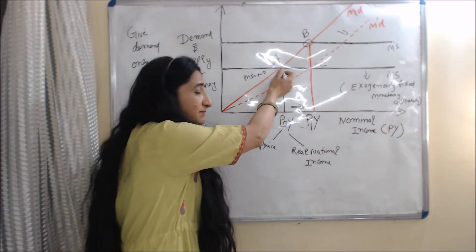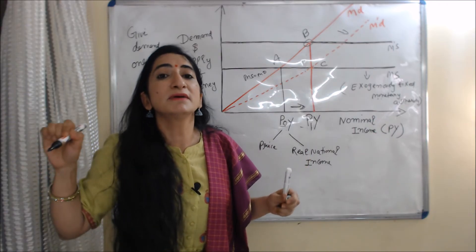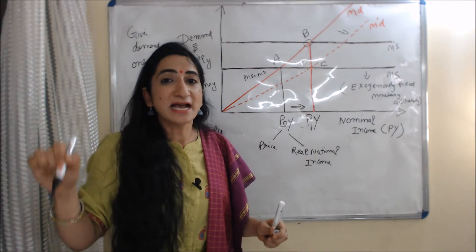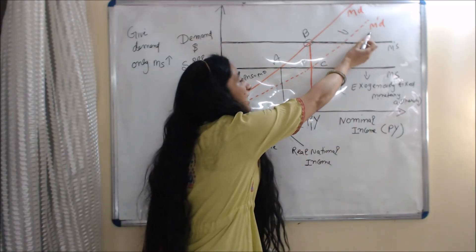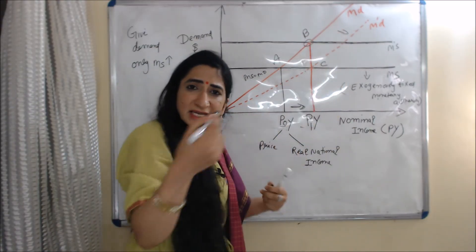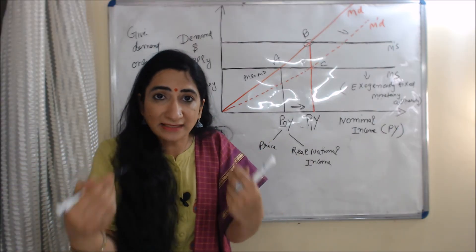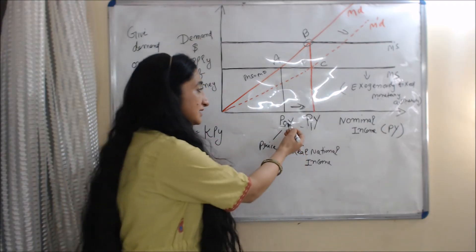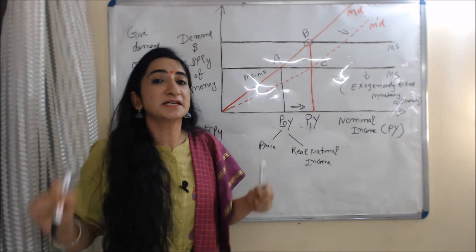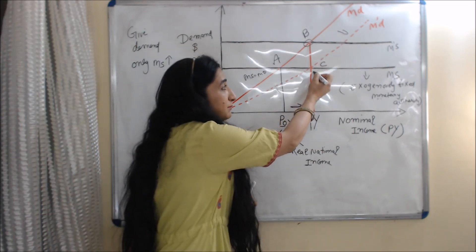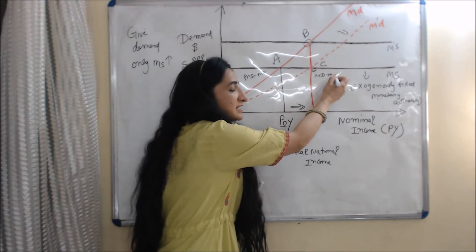Similarly, starting from initial equilibrium point A, if at a given money supply only money demand decreases, the money demand curve moves backward from MD to M'D. Again we have excess money supply, which increases the price from P0 to P1, and this continues until we reach a new equilibrium point at C, where money demand again equals money supply.